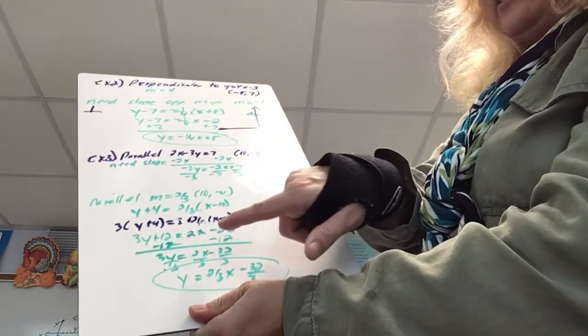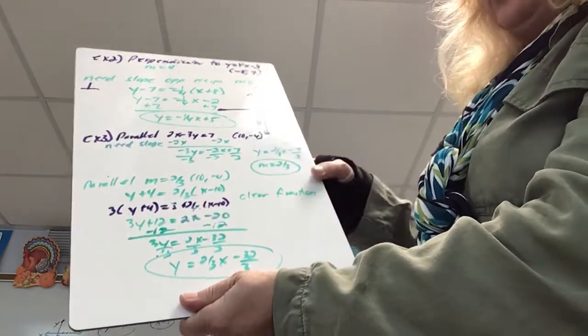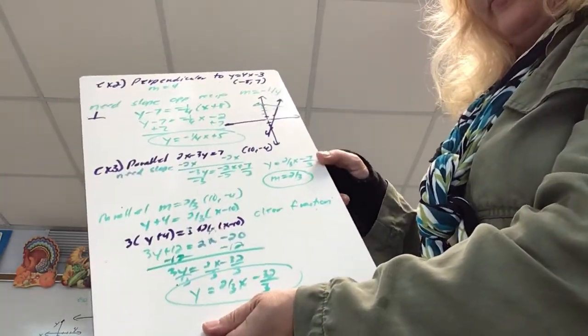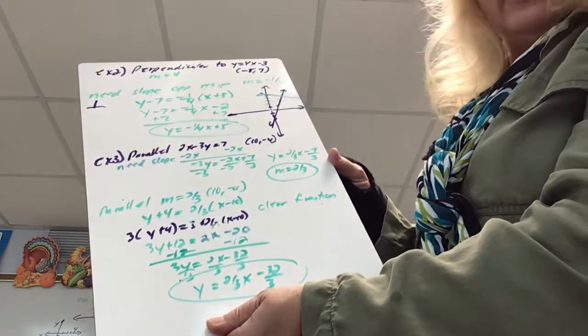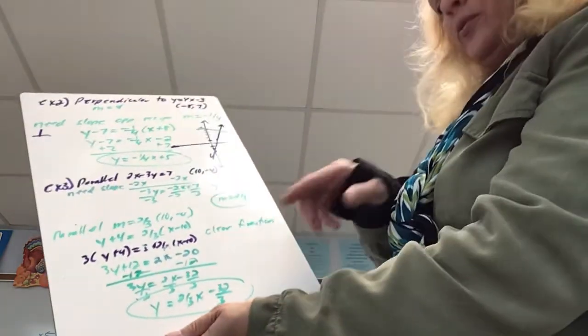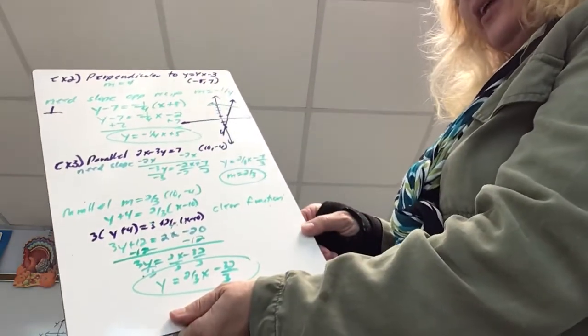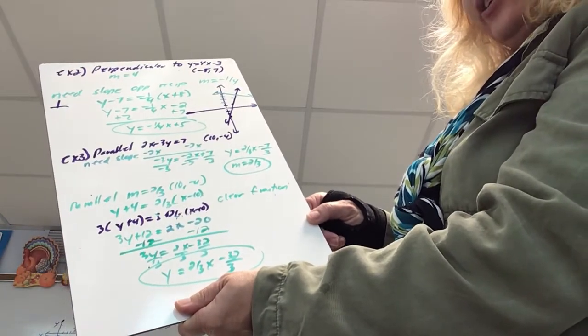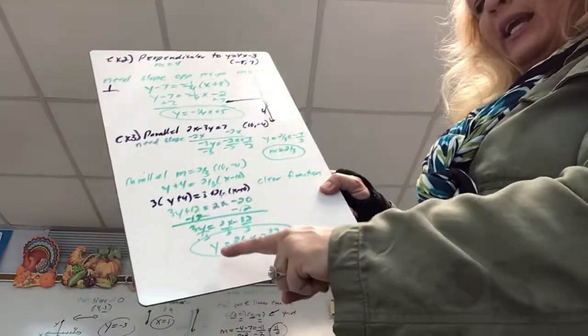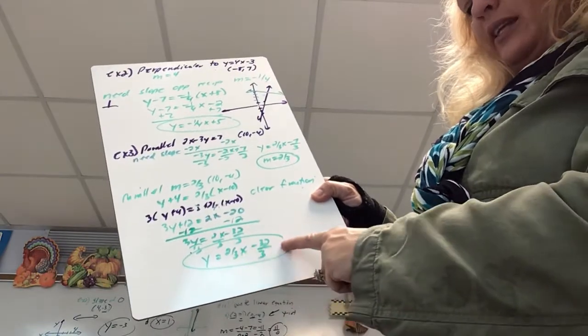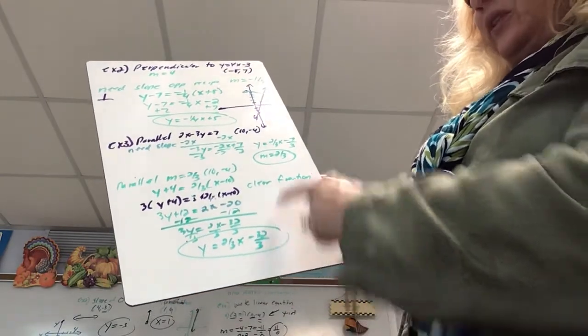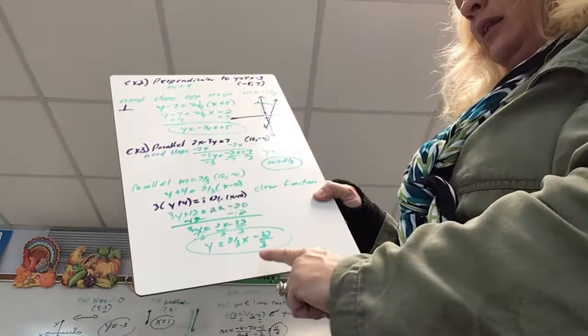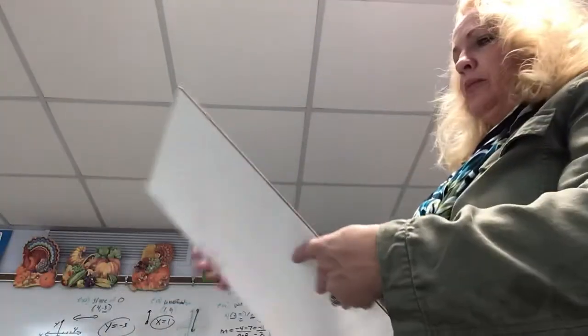Now I don't have a fraction, and I distribute my 2: so I have 2x minus 20. I need to get y by itself, so I subtract 12, giving 3y equals 2x minus 32. I divide by 3 and get y equals two-thirds x minus thirty-two thirds. These two lines would be parallel if we graphed them.